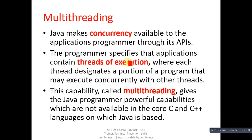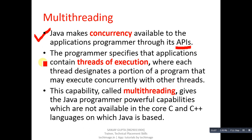Now coming on to the topic — what is multi-threading in Java. The first point is: Java makes concurrency available to the applications programmer through its API. Concurrency means you can run more than one task concurrently or simultaneously. If you want to run more than one task simultaneously, you can apply multi-threading in Java. Java provides an API — Application Programmer Interface — which is a predefined library.